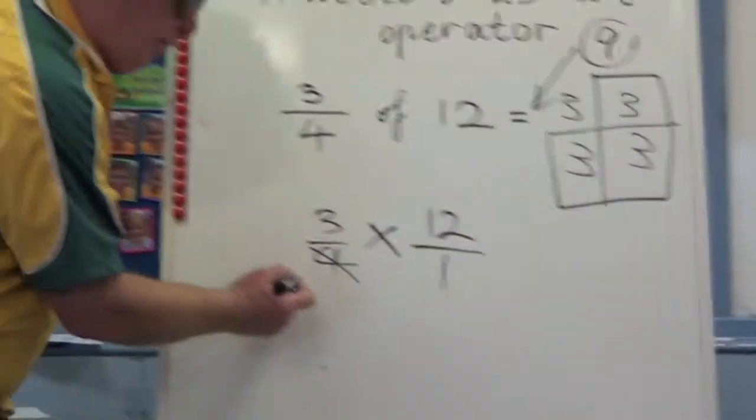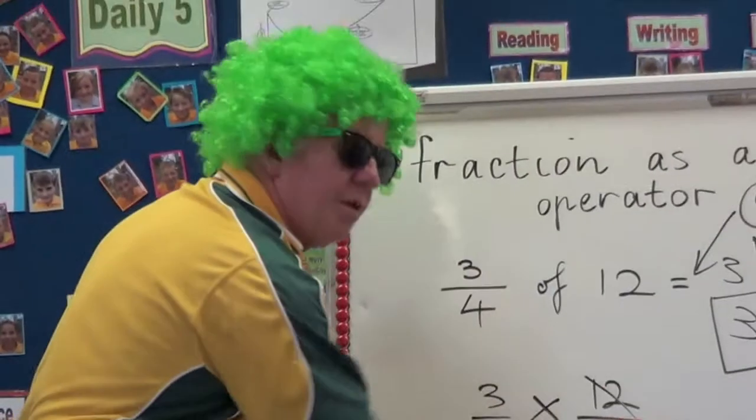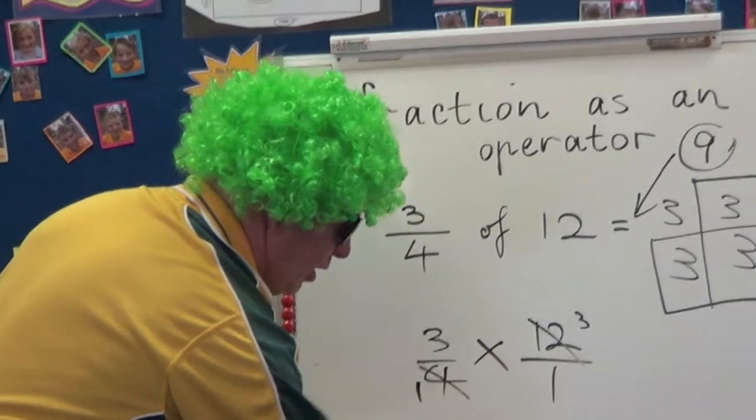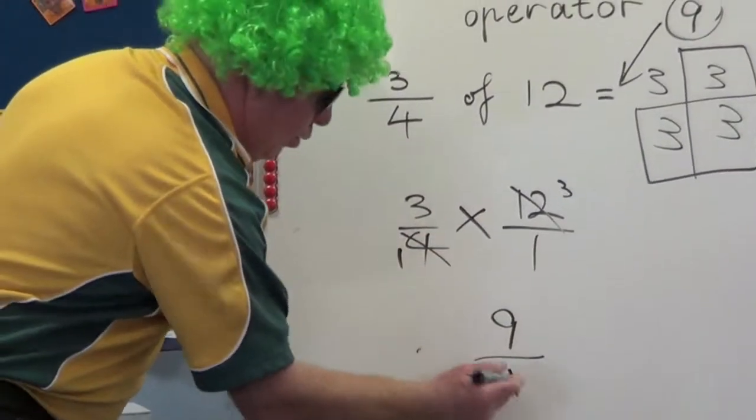How many times does four go into four? Once. How many into twelve? Three times. Let's multiply it out. Three times three is nine. One times one is one. One into nine?